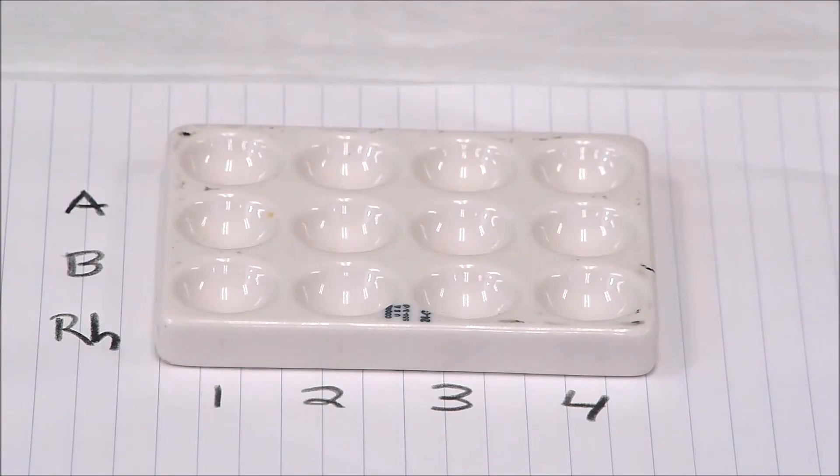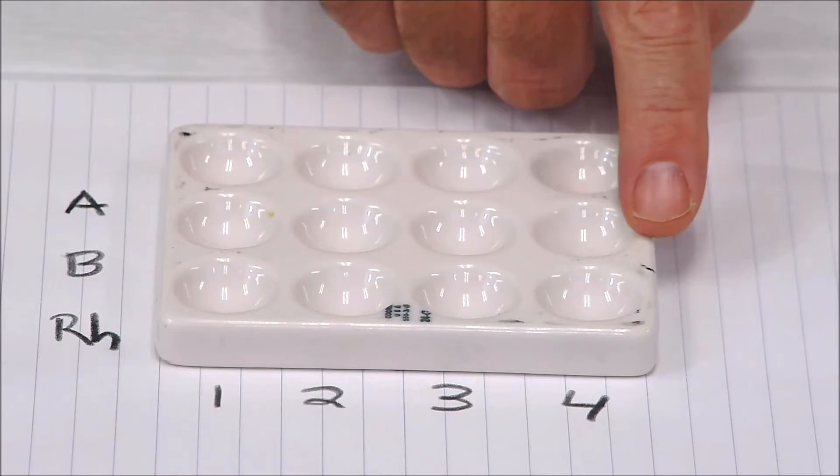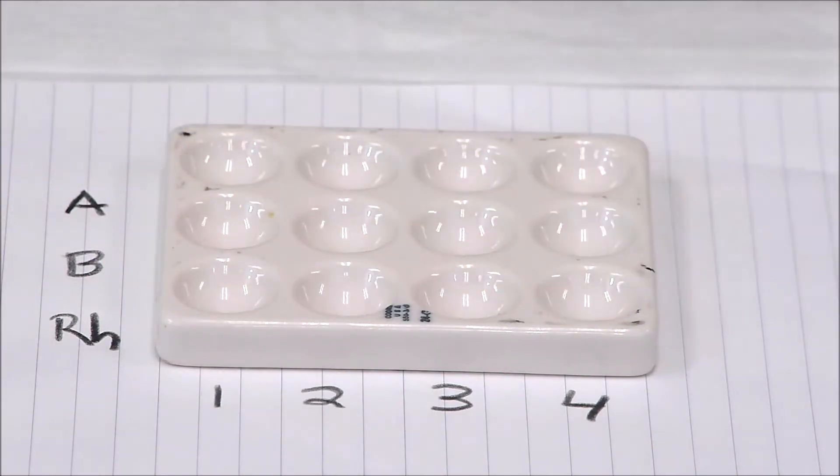We're going to have three drops of each of those samples. To the first drop we're going to add anti-A anti-serum, to the second drop we're going to add anti-B, and to the third drop we're going to add our anti-Rh or anti-D.